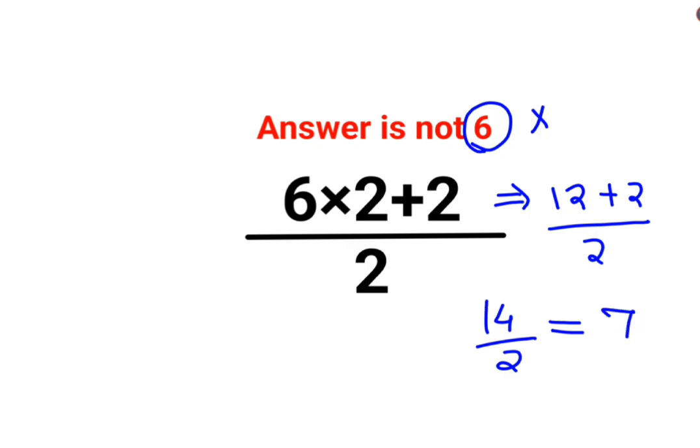See, you can even do this in the other manner. When you have 6 multiplied by 2 plus 2, you can separate this. You can divide this 6 multiplied by 2 by 2 and do it this way.